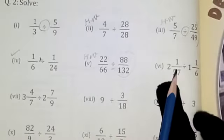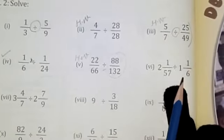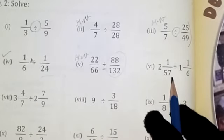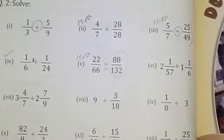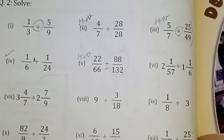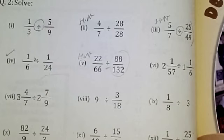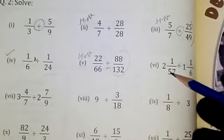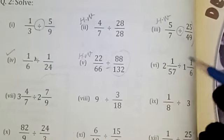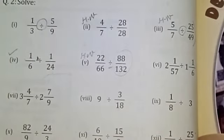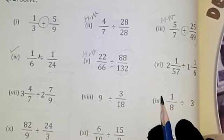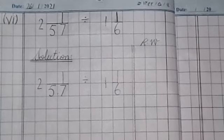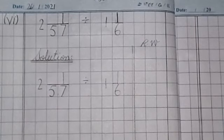Part number 6. 2 whole 1 by 57 divided 1 whole 1 by 6. Now, which fraction is this? Mixed fraction. I have told you. When we have a mixed fraction question, we will change it first. It will be improper. First, we will do improper. Then, we will solve it. Part number 6. 2 whole 1 by 57 divided 1 whole 1 by 6. Solution.